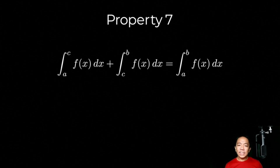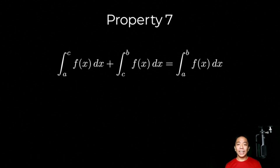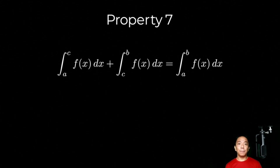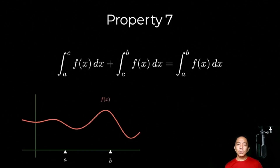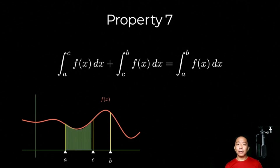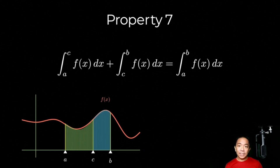Our seventh property states that the definite integral from a to c of f of x plus the definite integral from c to b of f of x — notice yung upper bound ng integration ng unang term ay nagkakorespond dun sa lower bound ng second term: a to c, c to b — is equal to the definite integral from a to b derecho. Notice that hindi natin sinabi kung nasan si c in relation to a and b — that's because it doesn't matter. Here I have a function f of x with bounds a to b. If we put c sa gitna, we can see that the definite integral from a to c plus the definite integral from c to b is just really the definite integral from a to b.